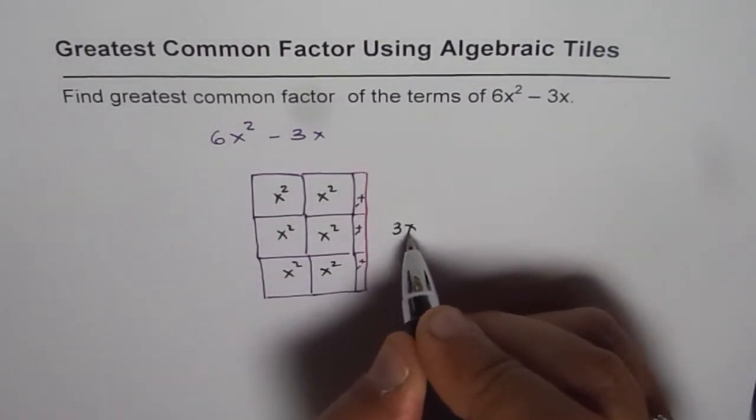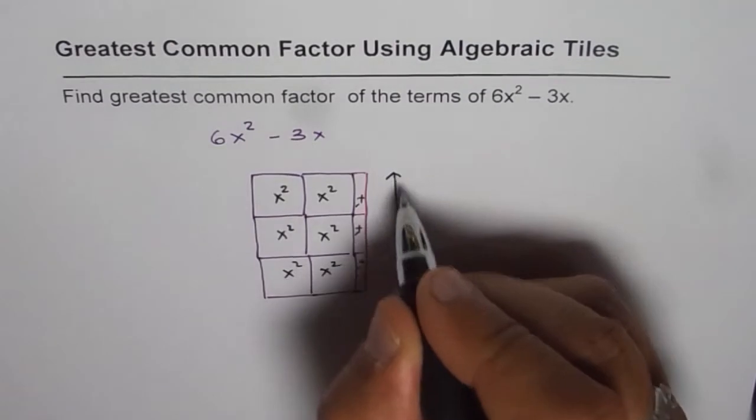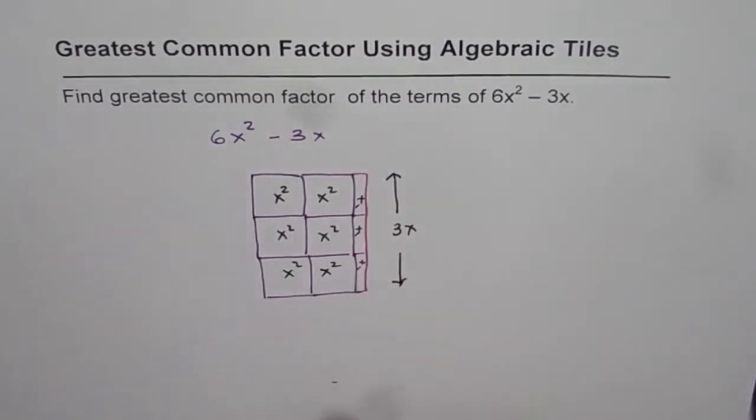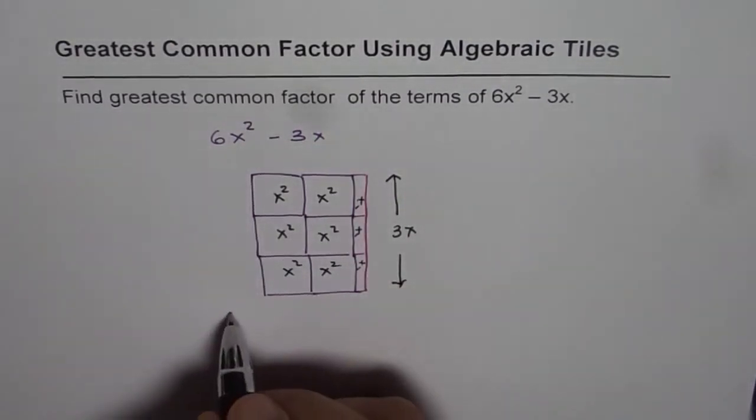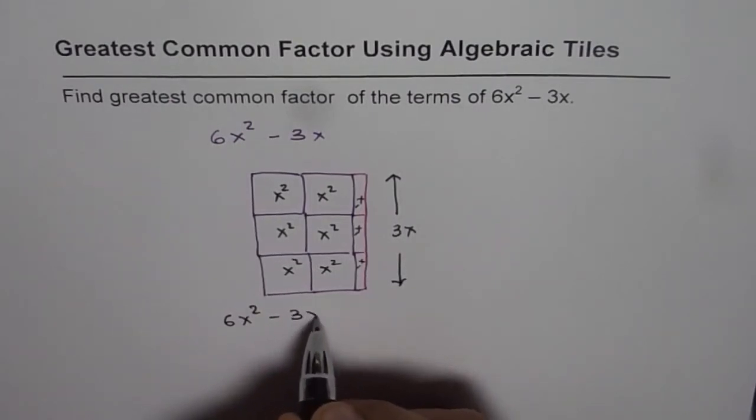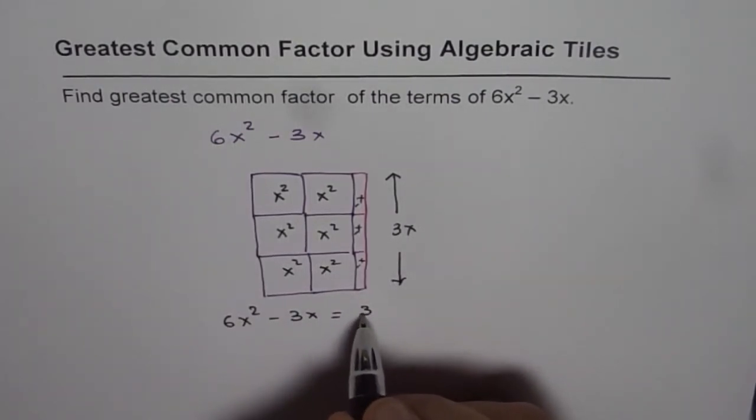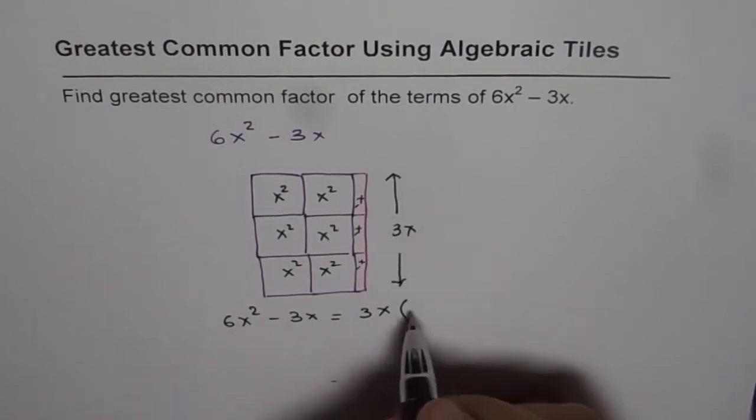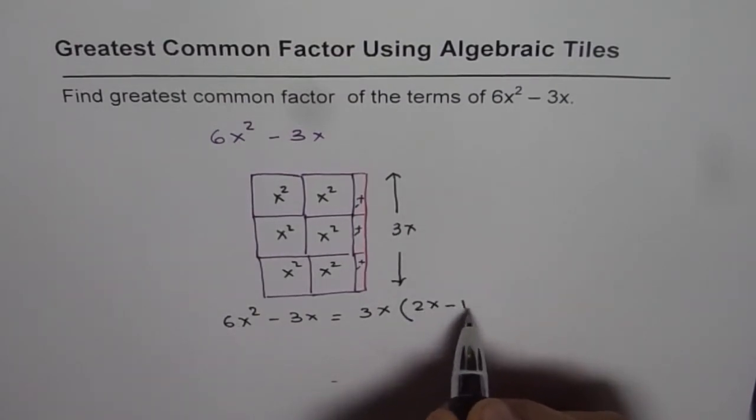So this width of 3x is the common factor. We can write 6x squared minus 3x as equals to 3x times 2x minus 1.